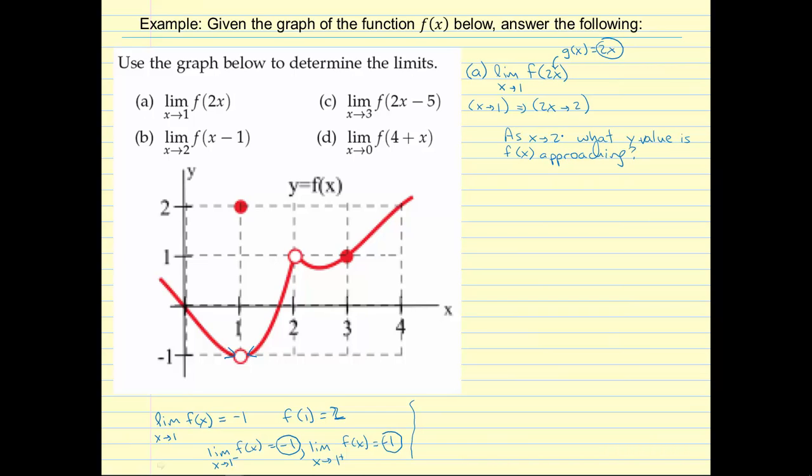As x approaches 2, what's the y value approaching? So now we're jumping over here, and as I go along the graph, pointing toward the value of x equals 2, we're getting a y value of 1. And if I go along the right side of the graph, as x approaches 2, I get a y value approaching 1. So in this case, the limit as x approaches 1 of f of 2x is 1.